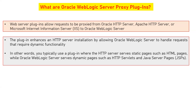For that, we redirect the request to backend WebLogic servers. When you have a plugin, your static requests can be handled by your web server — which could be Apache, OHS, or IIS — and for dynamic functionalities, your plugin will redirect the request to your backend application server. In other words, you typically use a plugin where the HTTP server serves static pages such as HTML pages, and Oracle WebLogic server serves dynamic pages such as HTTP servlets and JSPs.